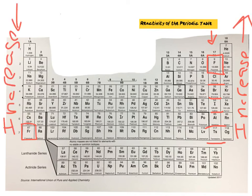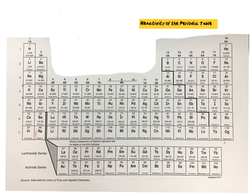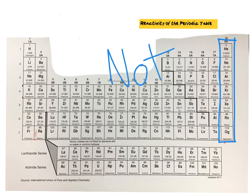Just to recap one more time: in group 1 our most reactive metal is francium, and your reactivity is going to increase as you move down through the group. On the other side with the non-metals, your reactivity is going to increase as you go up. Group 18, which has the noble gases, is going to have the lowest reactivity — or they are not reactive — because they have a full shell of valence electrons.